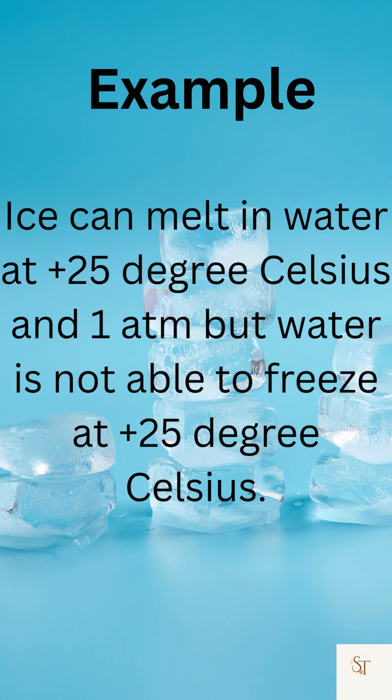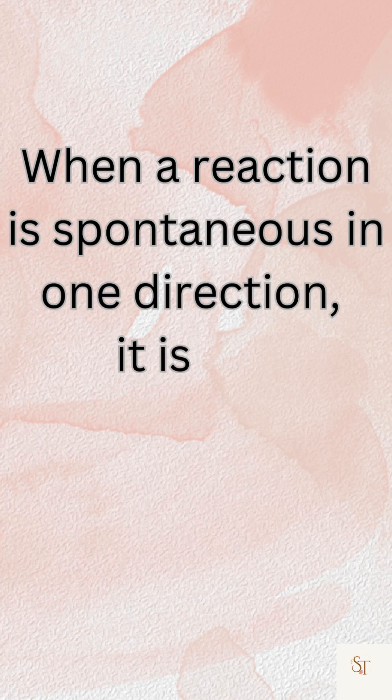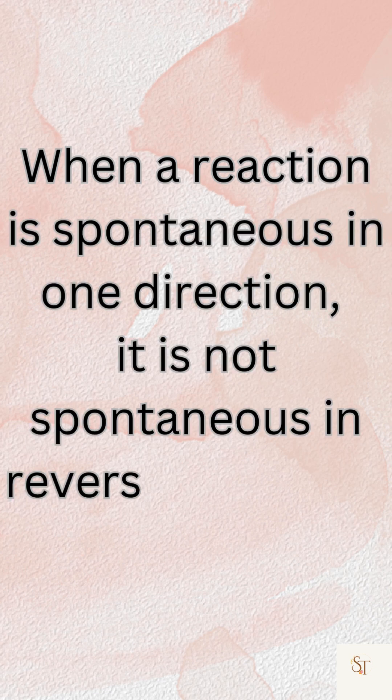For example, ice can melt in water at plus 25 degrees Celsius at one atmosphere, but water is not able to freeze at plus 25 degrees Celsius. When a reaction is spontaneous in one direction, it is not spontaneous in the reverse direction.